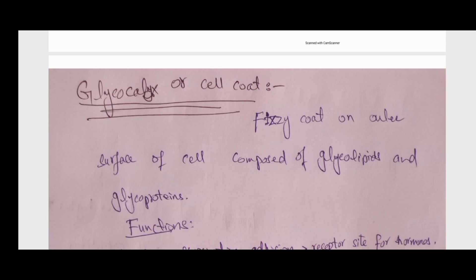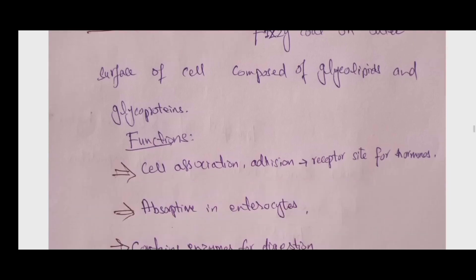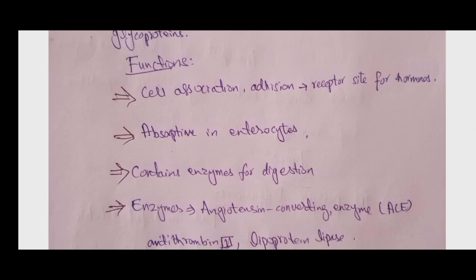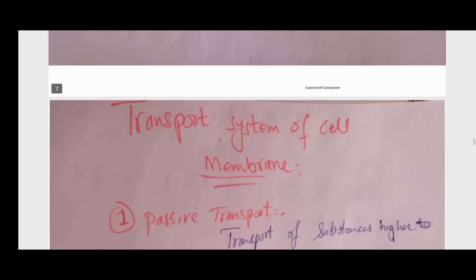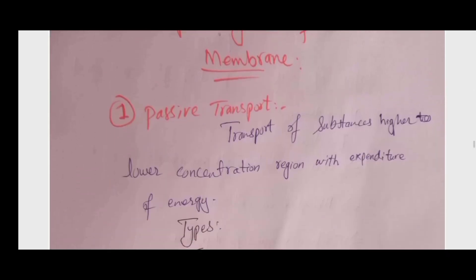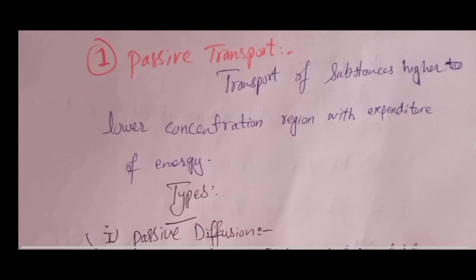Some functions of the glycocalyx: it enables cell-to-cell adhesion, it acts as cell receptors for signaling pathways for hormones, and it functions in absorption — such as in the enterocytes of the small intestine. It may also contain digestive enzymes such as enterokinase, angiotensin-converting enzymes, antithrombin 3, and lipoprotein lipase.